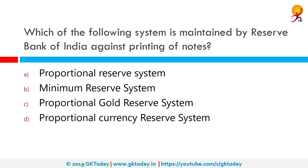Which system is maintained by the Reserve Bank of India against printing of notes? The correct answer is the Minimum Reserve System. Originally, the assets of the issue department were to consist of not less than two-fifths of gold or sterling securities, with gold not less than rupees 40 crores in value — the Proportional Reserve System. The system changed in 1956; since then, RBI is required to maintain gold and foreign exchange reserves of rupees 200 crore, of which at least rupees 115 crore should be in gold. This is called the Minimum Reserve System.